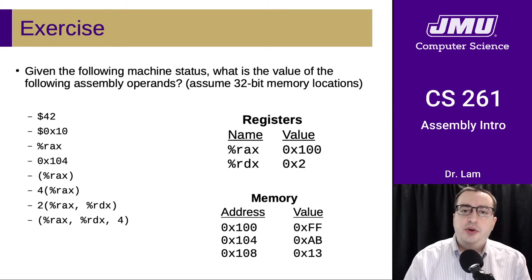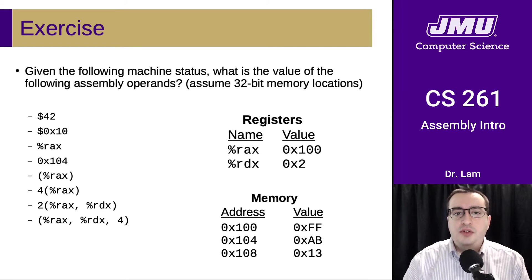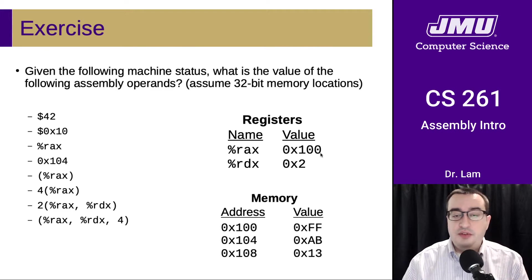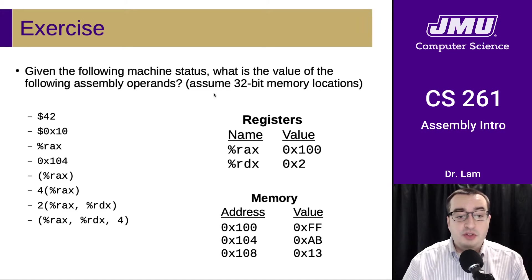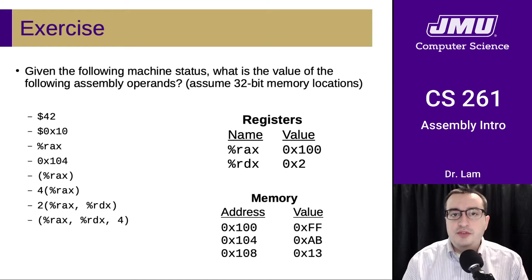It is worth pausing at this point just to try to do some practice problems. Here is an exercise with some machine status — the values of some registers and the values in some memory locations. This is the address of a place in memory and the value stored there. Assuming this is all the information you need, what is the value of each of these assembly operands? Pause the video and take a couple of minutes to work out what all of these values are going to be.